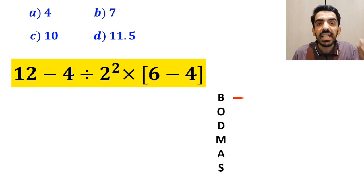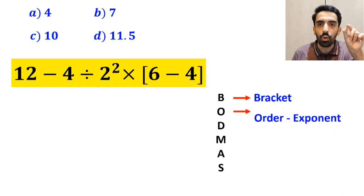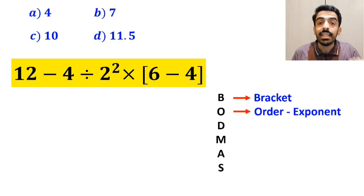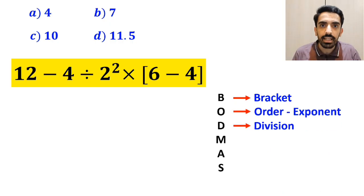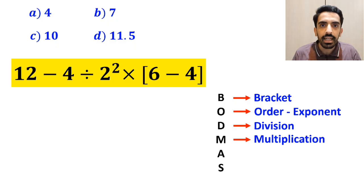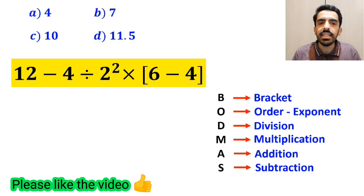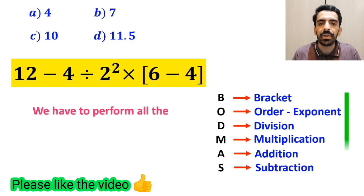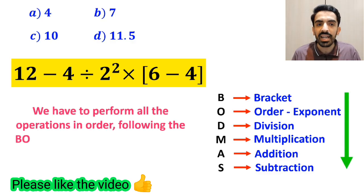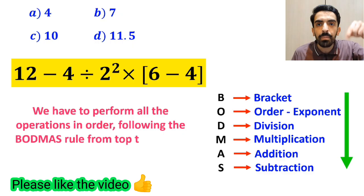In this rule, B stands for bracket, O stands for order, D stands for division, M stands for multiplication, A stands for addition, and S stands for subtraction. It means that we have to perform all the operations in order, following the BODMAS rule from top to bottom.